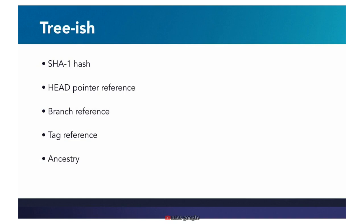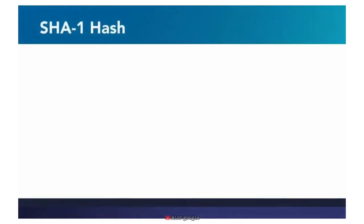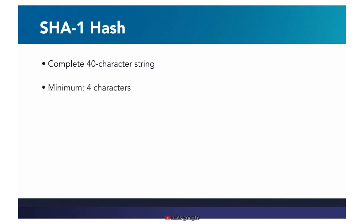We aren't ready to learn about branch and tag references yet, so let's look at the SHA1 hash and the head pointer. Git takes a change set along with all its metadata and sends it into an SHA1 hashing algorithm, and the result is a 40-character string that serves as the identifier for a commit. We don't have to type all 40 characters — we can use fewer, and Git can still know which commit we're talking about. The minimum is four characters, but a good rule of thumb is 8 to 10 characters, though that depends on the size of your project.